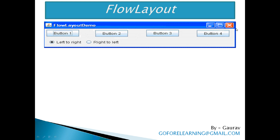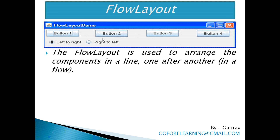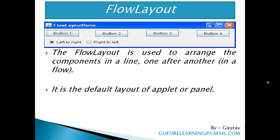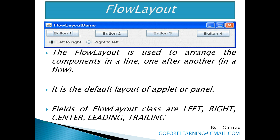Next is Flow Layout. You can see the picture. The Flow Layout is used to arrange the components in a line, one after another, like button 1, button 2. When a line is filled with components, they are automatically placed in the next line. It is the default layout of Applet or Panels. Fields of the Flow Layout class are: Left, Right, Center, Leading, and Trailing.